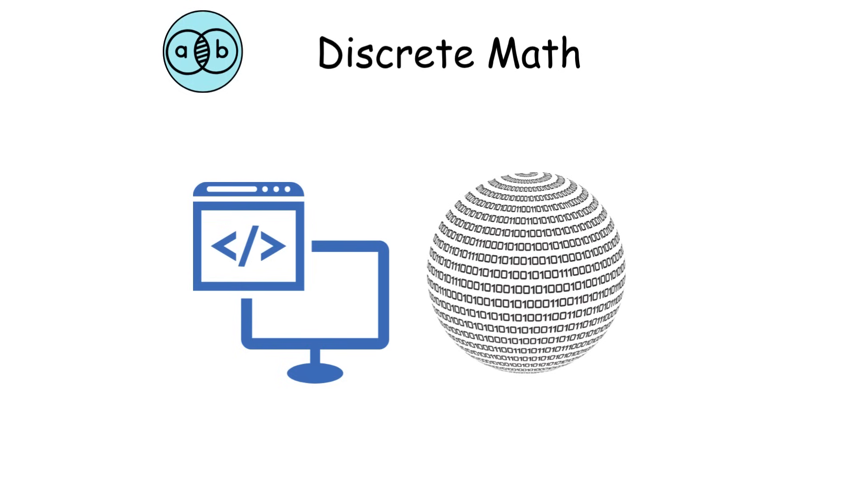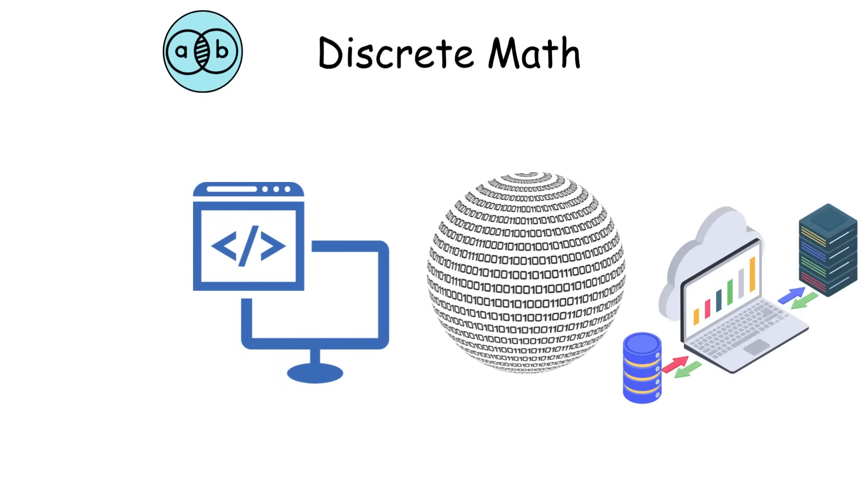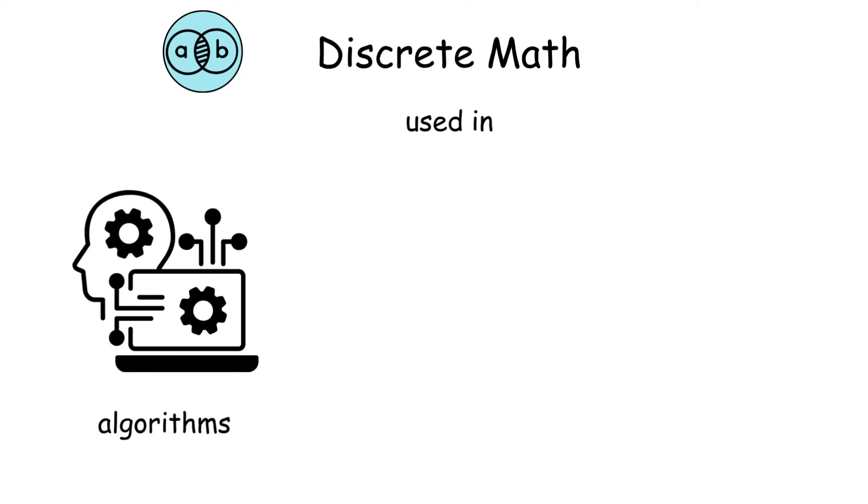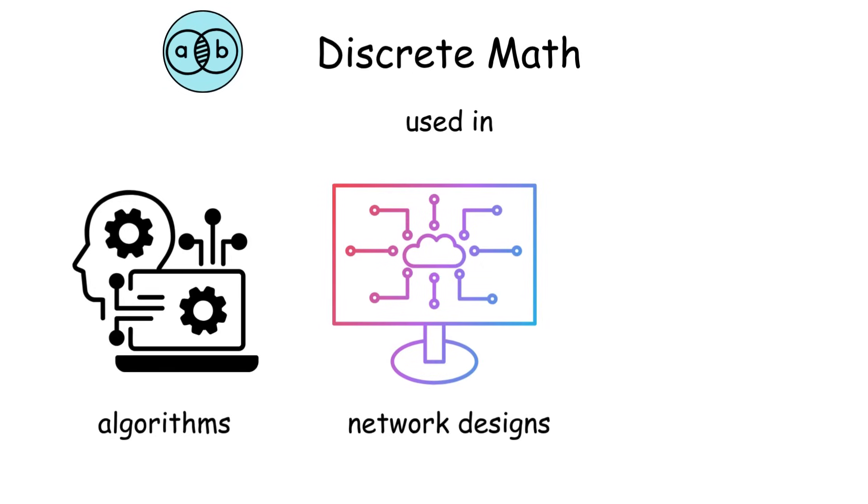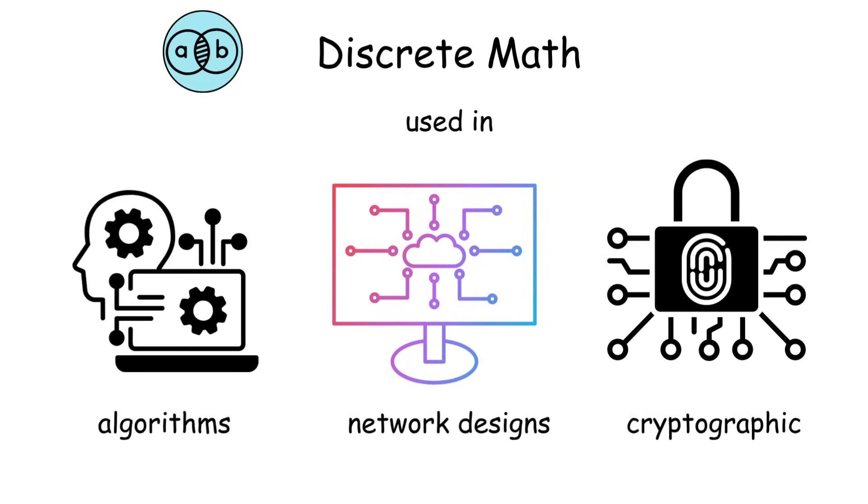Advanced topics, like coding theory, protect information during transmission. Discrete mathematics drives computer science, enabling efficient algorithms, network designs, and cryptographic systems.